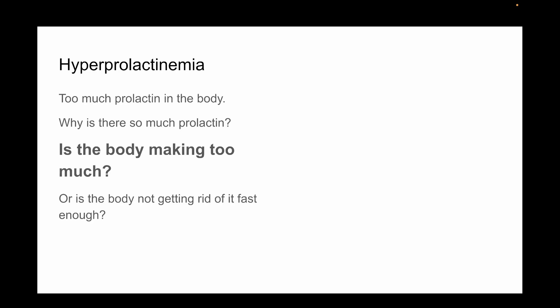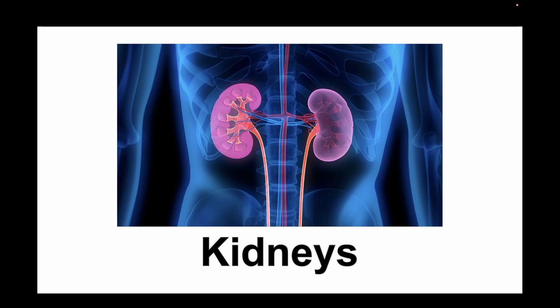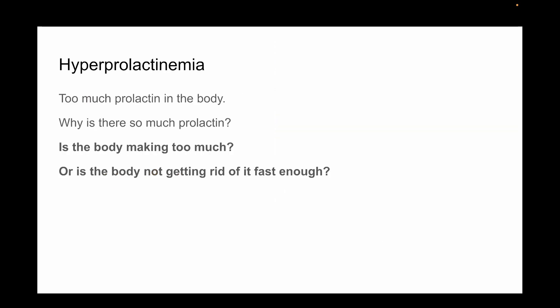With that covered, what if a person's hyperprolactinemia is due to not enough prolactin being removed from the body? For this, we bring up the body's kidneys. The kidneys are important for removing excess prolactin from the body. If someone's kidneys are unhealthy, their body may have difficulty removing prolactin from their bloodstream. We've now gone over different ways a person could have hyperprolactinemia.